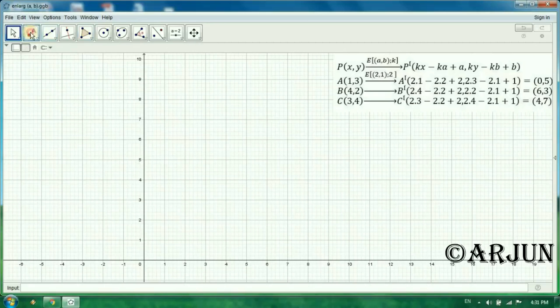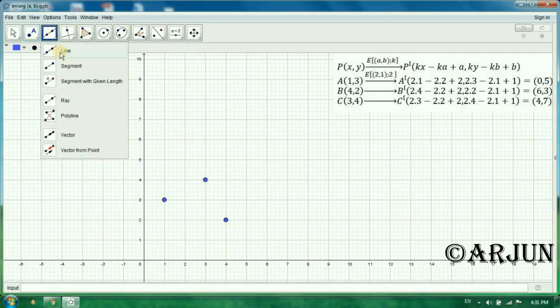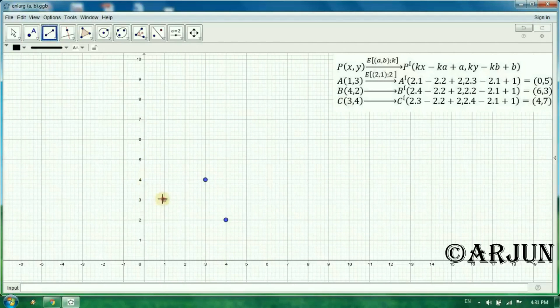Let's plot ABC in this graph. (1,3), this is our A. B equals (4,2), and C equals (3,4). Join them by straight line. Then you will get triangle ABC. This is our object.